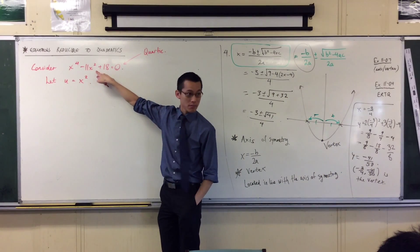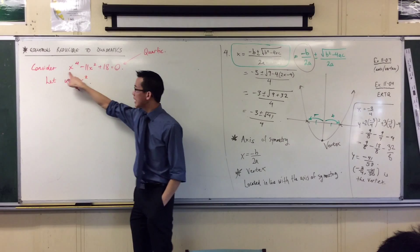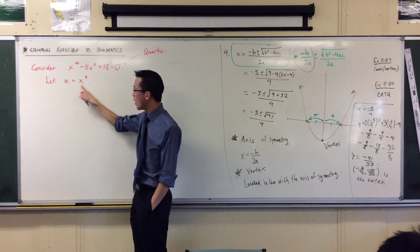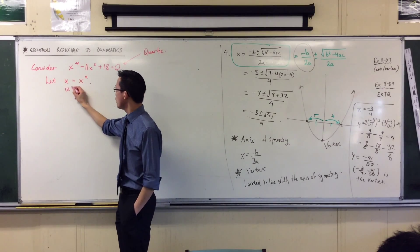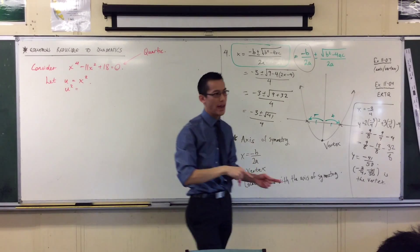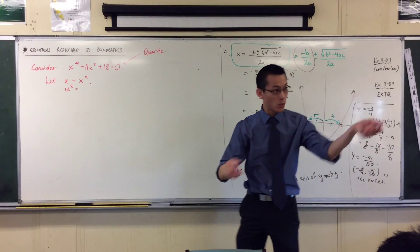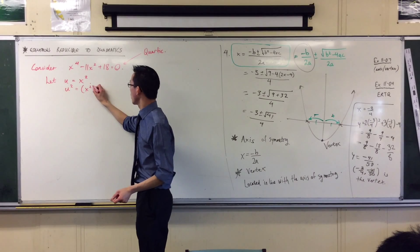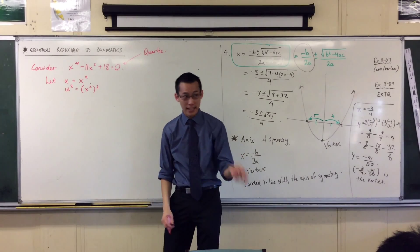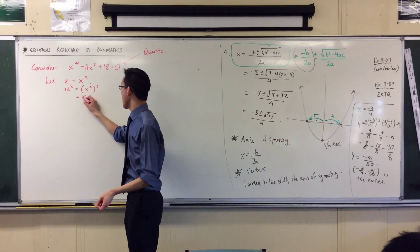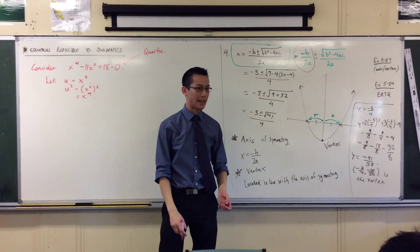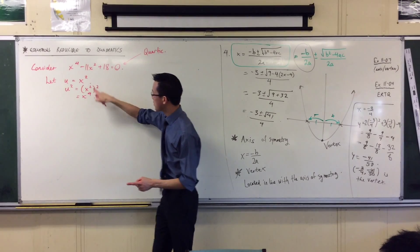How will I get rid of this square? Well, if I square this, if u is x squared, then u squared will be x squared squared. And by my index laws, I know that's x to the power of four. So now I've got something to get rid of the x squared and I've got something to get rid of the x to the power of four. That's going to turn this into a quadratic.